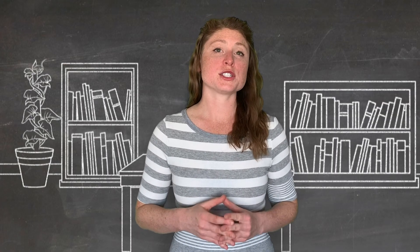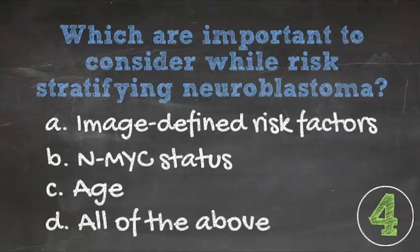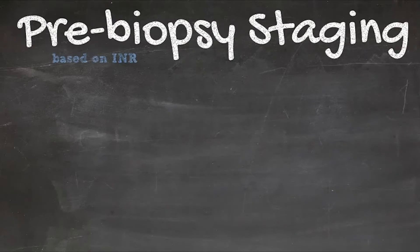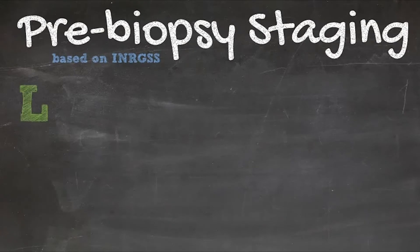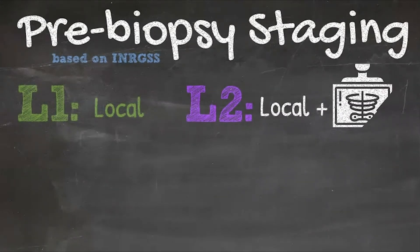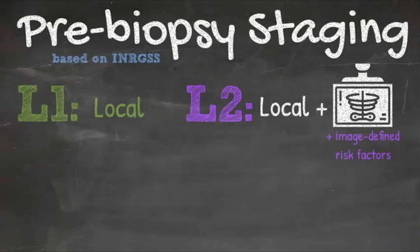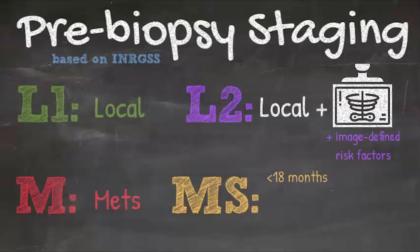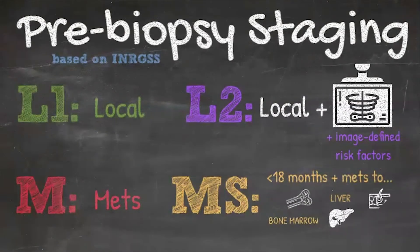Based on the most recent iteration of the neuroblastoma staging system, the INRGSS, it is possible to assign a stage before any invasive procedure is performed. Tumors that are localized are categorized as L1. If they're localized but have image-defined risk factors — that is, they may encase nerves or vessels — then they would be L2. If they have metastatic disease, they're M. And then there's the special category of MS for children less than 18 months of age who have metastasis to either the bone marrow or the skin.